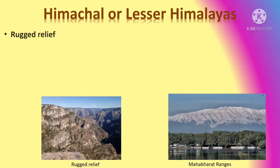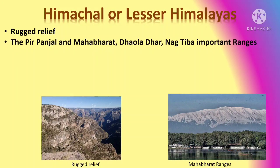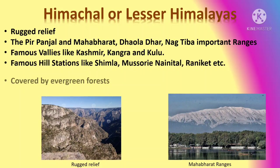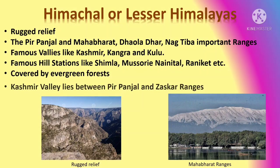Himachal ranges are also called the Lesser Himalayas. They have rugged relief. Pirpanjal, Mahabharat, Daul Dara, and Nagatiba are the important ranges within Himachal. It contains famous valleys like Kashmir, Kangra, and Kulu. Himachal has famous hill stations like Simla, Mussoorie, Nainital, and Truncate. Himachal is covered by evergreen forest. The famous Kashmir valley lies between the Pirpanjal and Chaskar ranges.